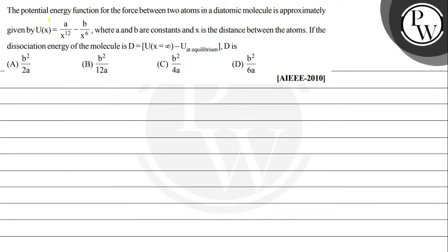Let us see the question. The question says: the potential energy function for the force between two atoms in a diatomic molecule is approximately given by a function where A and B are constants and x is the distance between the atoms. If the dissociation energy of the molecule is given by D = U(x at infinity) minus U at equilibrium, then D is?